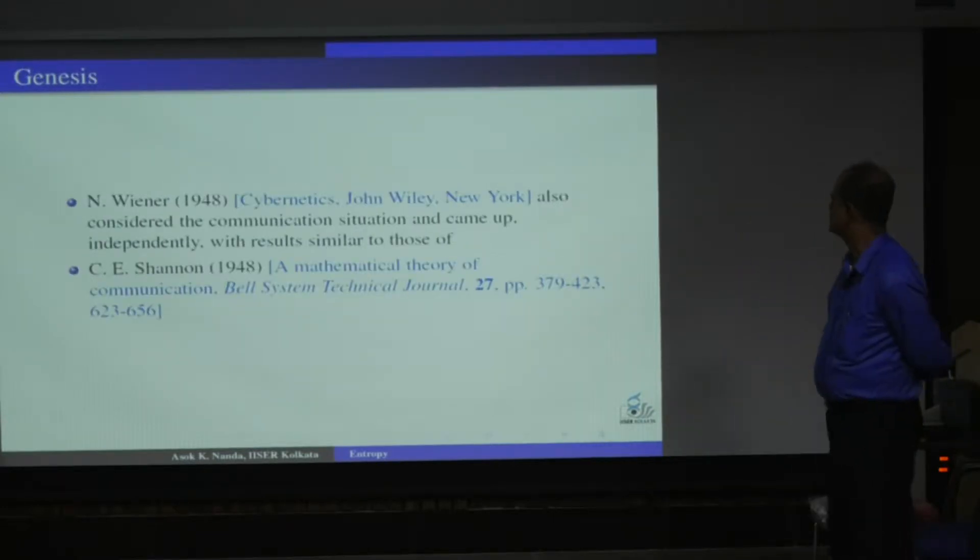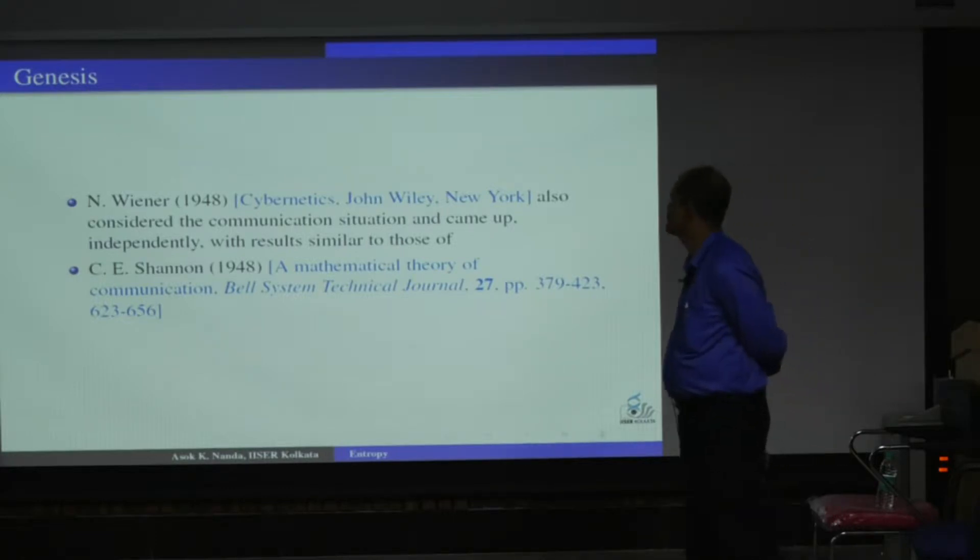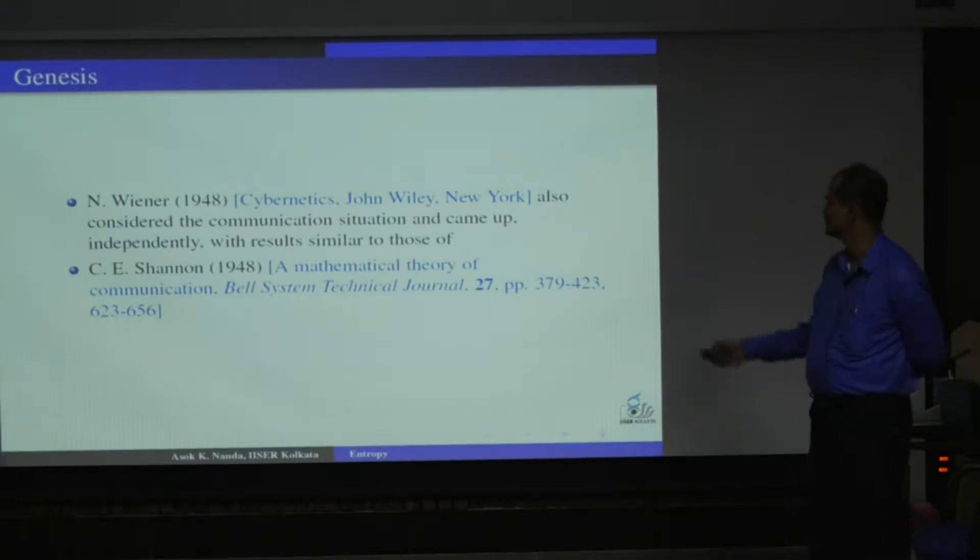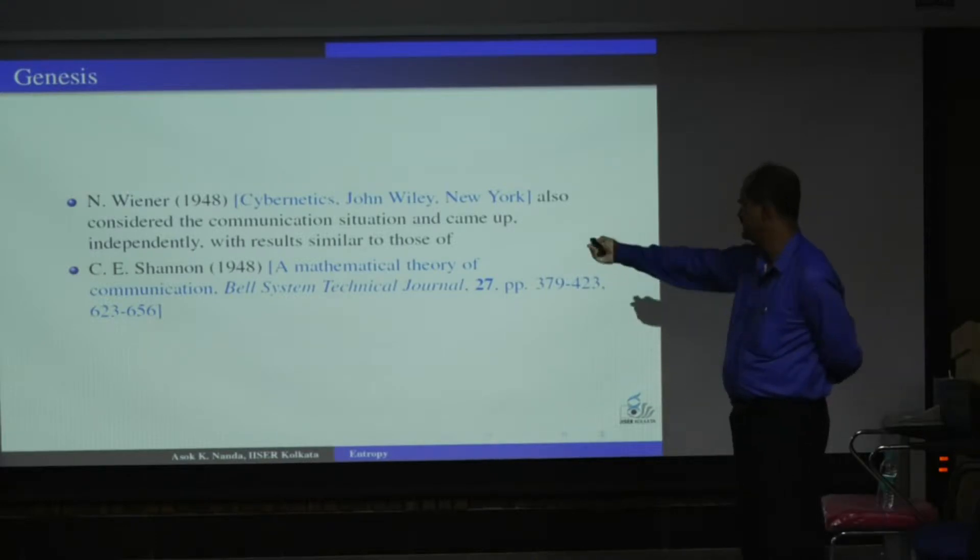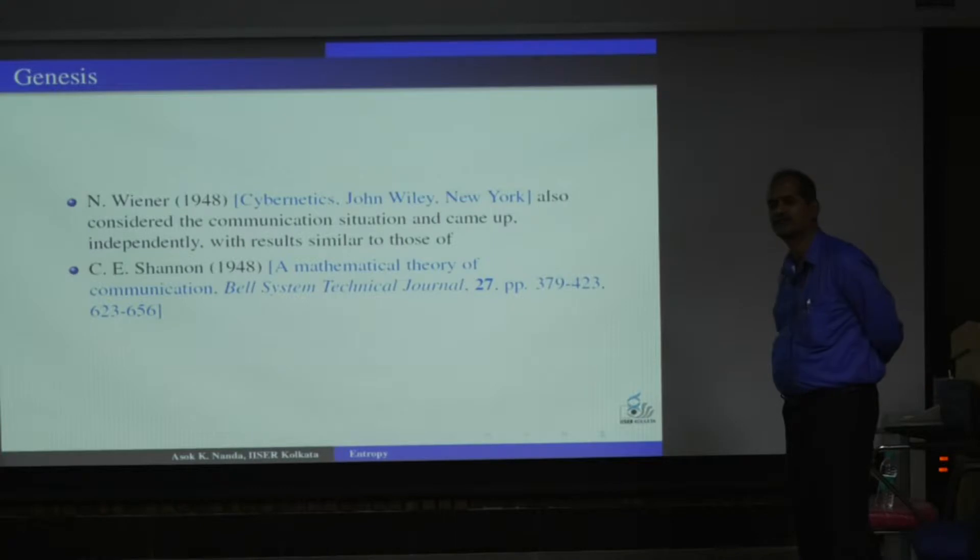These are the two basic papers. The second one is Shannon, this is a research paper. The first one is Wiener's book. These are the two basic things started together in 1948. Shannon entropy is mostly famous. Although the idea is the same, Wiener used it in a different way. In Wiener's book, there is no reference to Shannon, and in Shannon's paper, there is no reference to Wiener. This clearly tells that they have done it independently without discussing this thing.